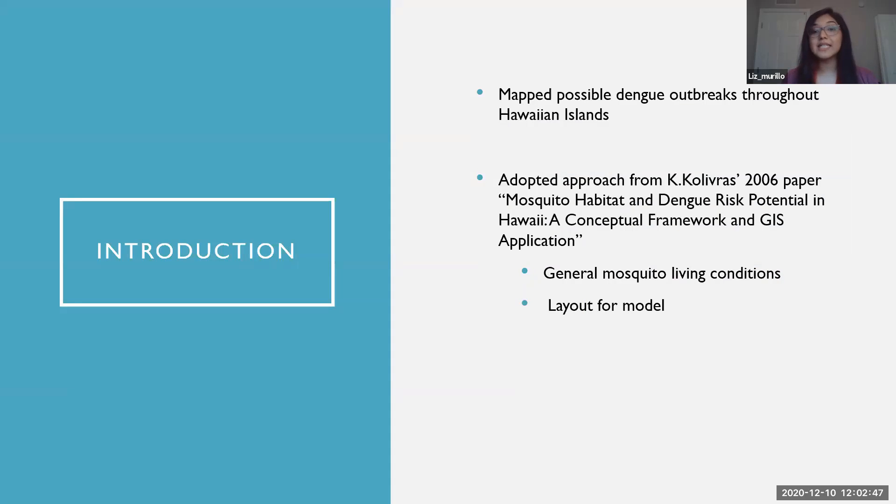So for my project, I wanted to map possible dengue outbreaks across the Hawaiian Islands. But I adopted this approach from a 2006 paper where they listed general requirements for mosquito survival habitats. I wanted to get those general requirements and then build a model where those requirements would give me a layout of where these possible dengue outbreaks would occur. They focused on the 2001-2002 outbreak with data specific to that, but for my project, I'm using data on a 30-year average span.